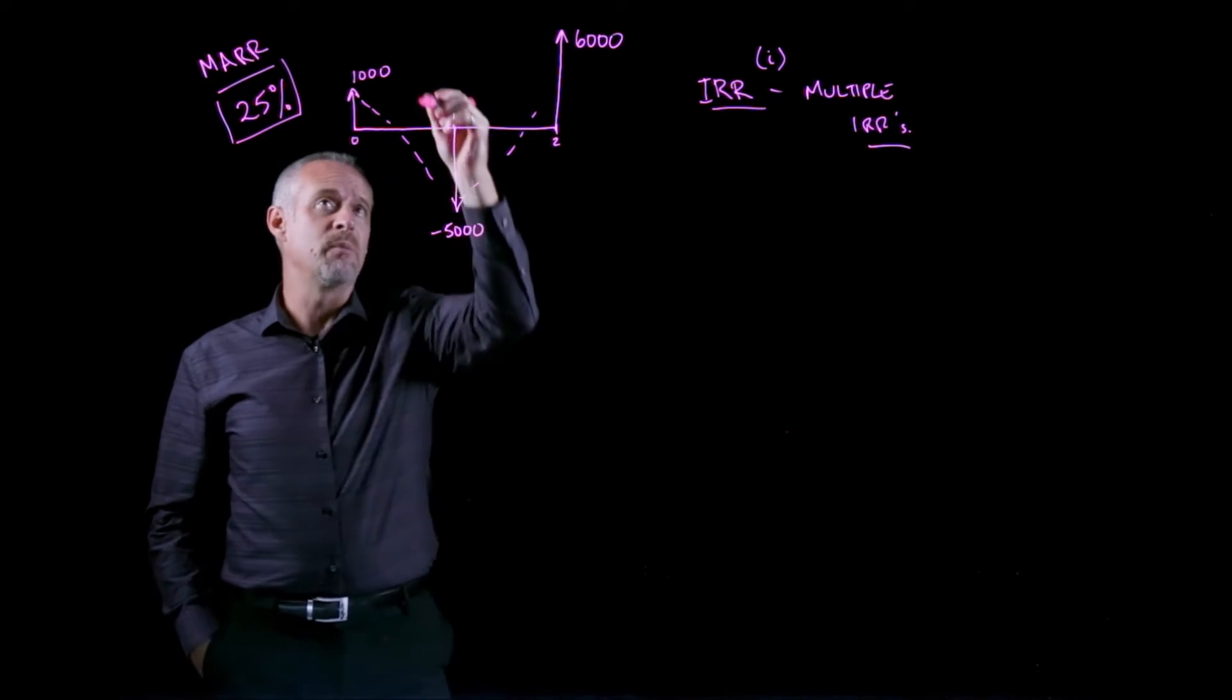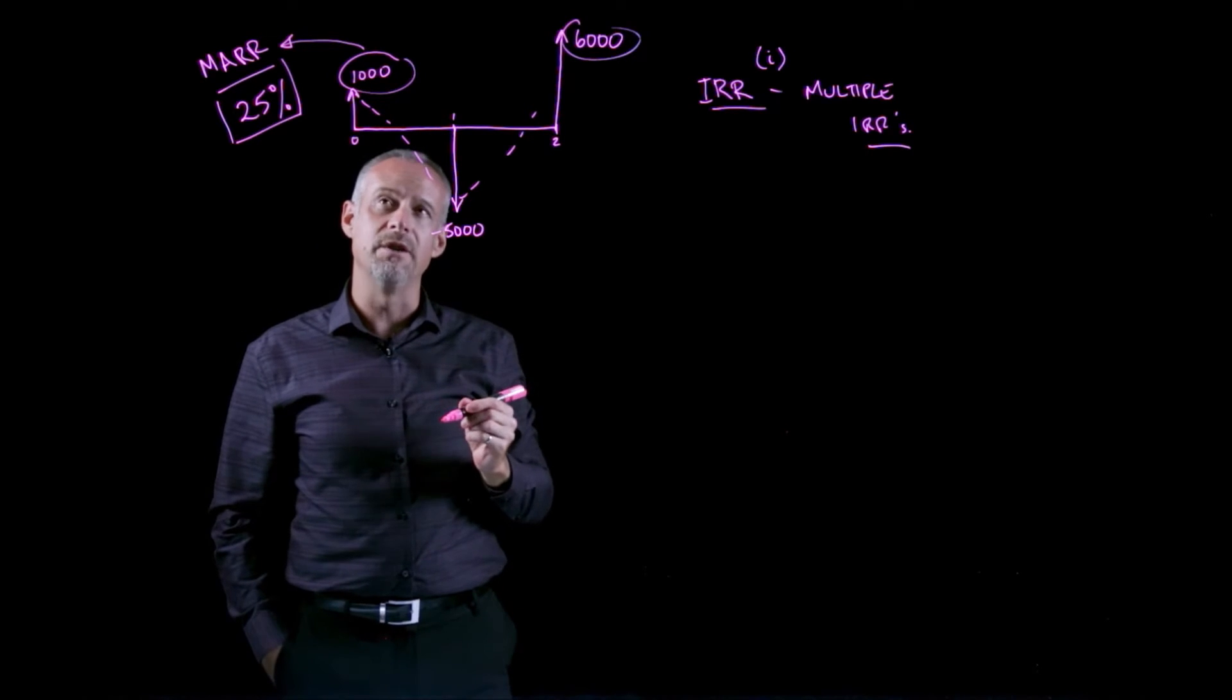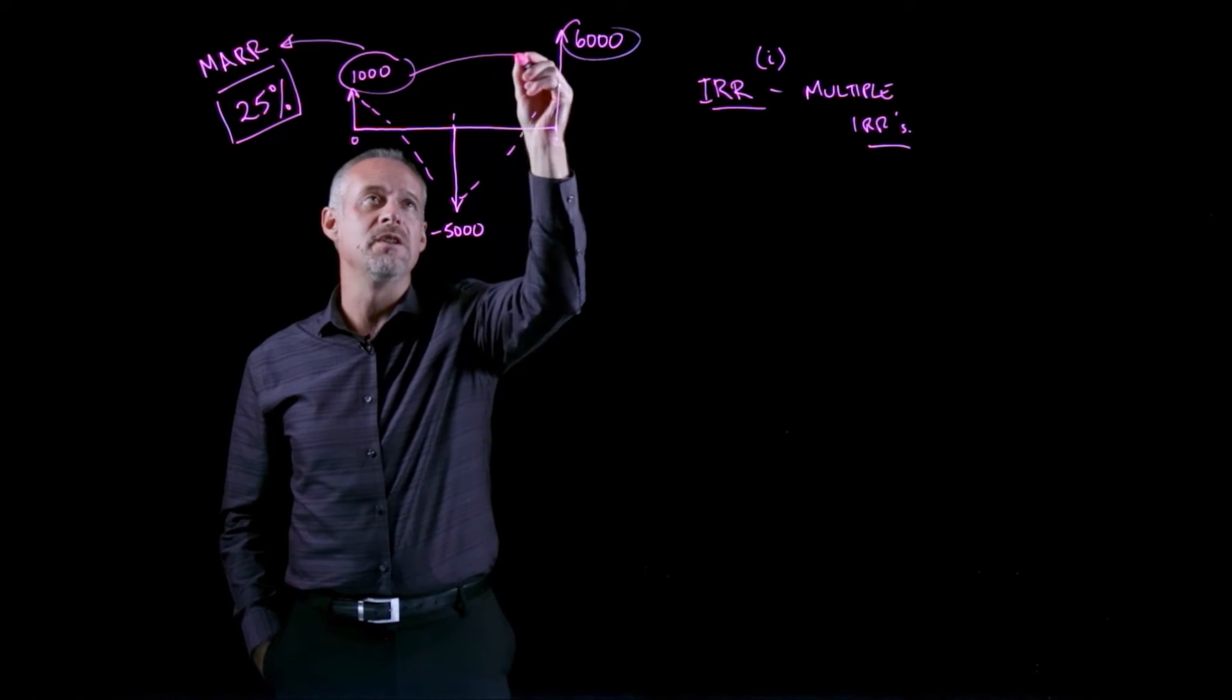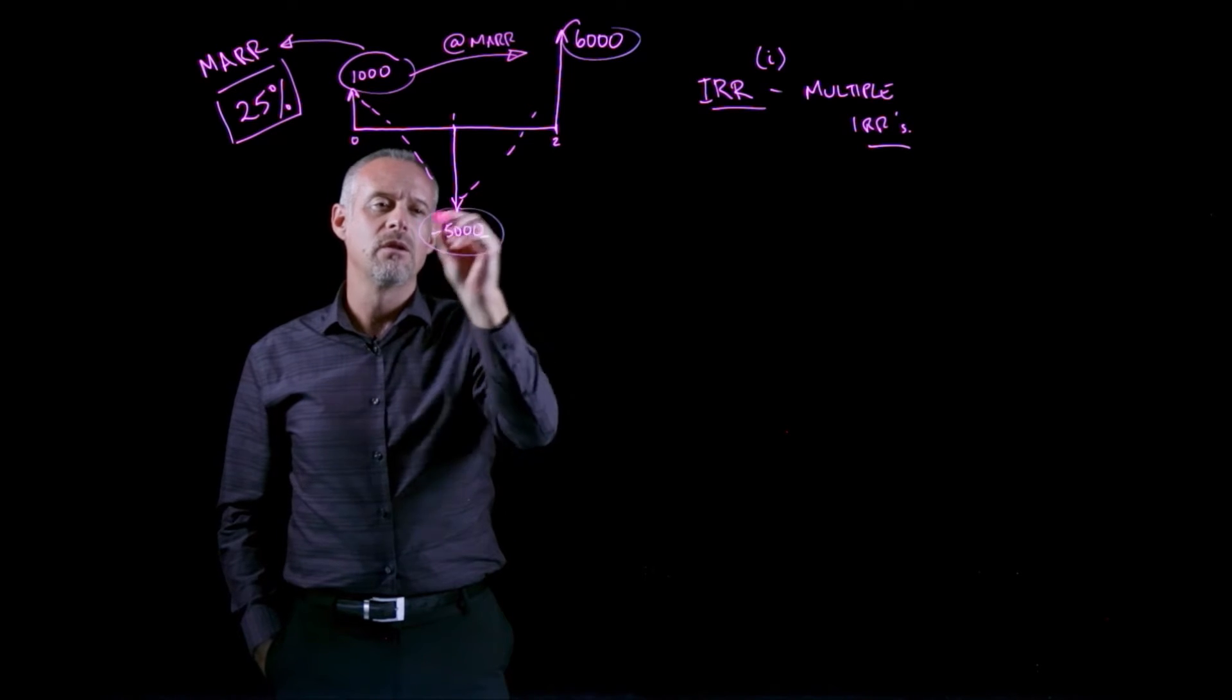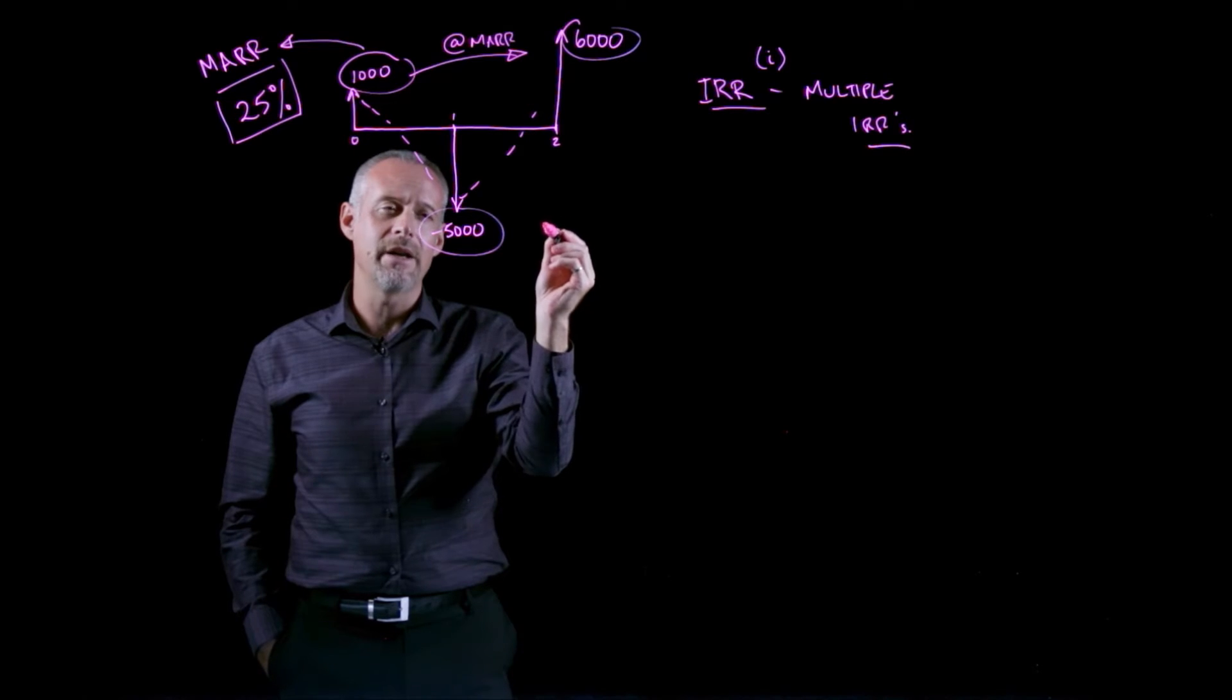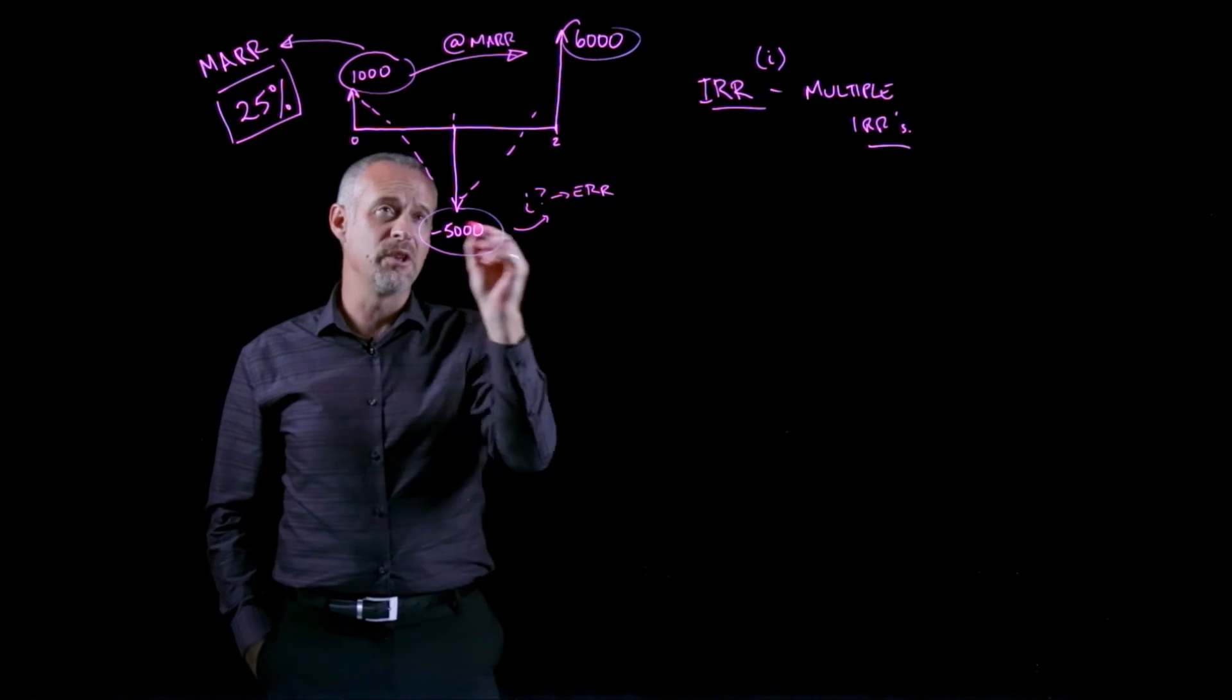If we take that assumption that positive cash flows get reinvested at the minimum attractive rate of return, one approach would be to take any positive cash flows forward in time at the MAR, then take any disbursements also forward at some unknown I and solve for that I. That I is defined as my ERR.